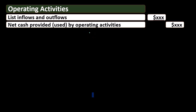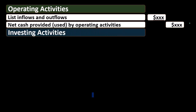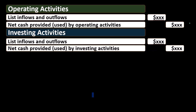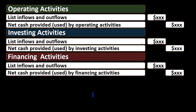Net cash provided by operating activities is like net income on a cash basis. Since this is an activity statement reporting activity over time, it is similar to the income statement, and therefore this section should have the most activity. Then we have investing activities — listing inflows and outflows — with net cash provided or used by investing activities. Investing activities deal with investing in stocks and bonds, as well as investment in long-term assets such as property, plant, and equipment.